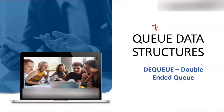Hello and welcome to the 7th lecture on queue data structure where we'll discuss DQ, that is double ended queue. Prior to this, in video number one we discussed about queue, in video numbers two and three we discussed about linear queue, its algorithm and program. In video numbers four and five we discussed about circular queue algorithm and program. In video number six we discussed about priority queue.